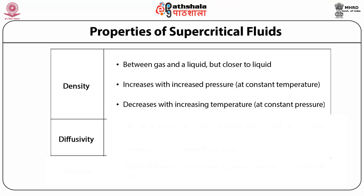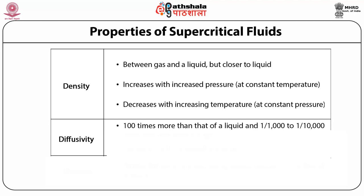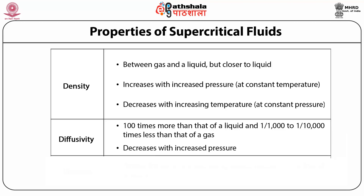The second property is diffusivity. Diffusivity of a supercritical fluid can be 100 times more than that of a liquid and 1/1000 to 1/10,000 times less than that of a gas. Because supercritical fluids have more diffusivity than a liquid, a solute can show better diffusivity in a supercritical fluid than in liquid. Diffusivity is parallel with temperature and contrary with pressure — increasing pressure causes supercritical fluid to become denser and decreases diffusivity.